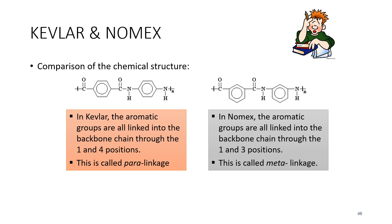Comparing Kevlar and Nomex: if you look at their structures, the position of the aromatic ring for Kevlar is at the 1,4-position, called para-linkage. For Nomex, the benzene ring is attached at the 1,3-position, which is meta-linkage. This difference in linkage position is why there are different properties between Kevlar and Nomex. That is all for this chapter.